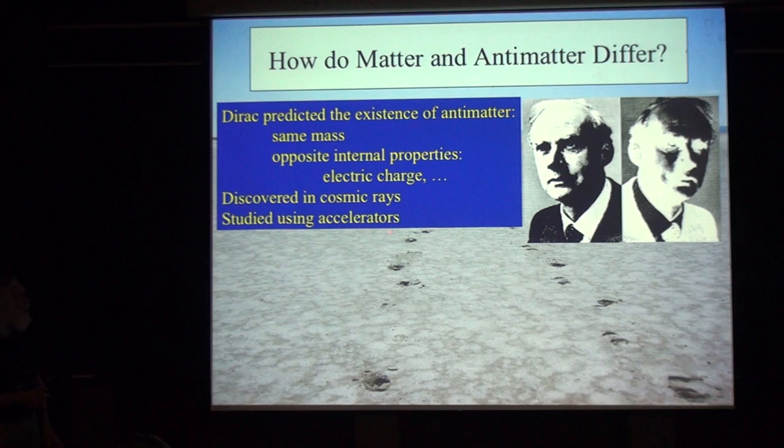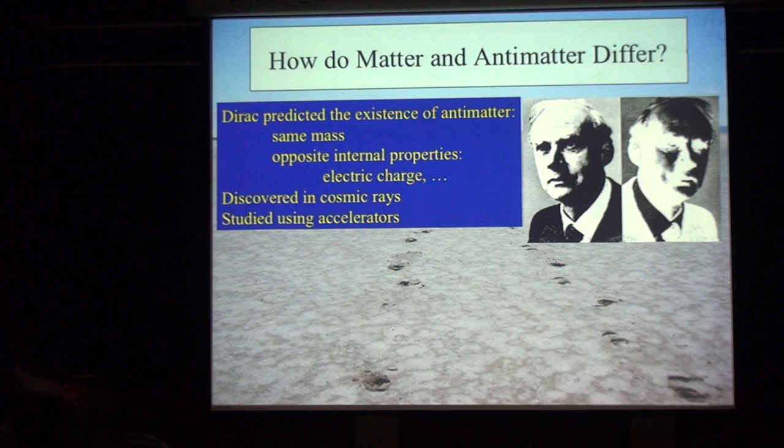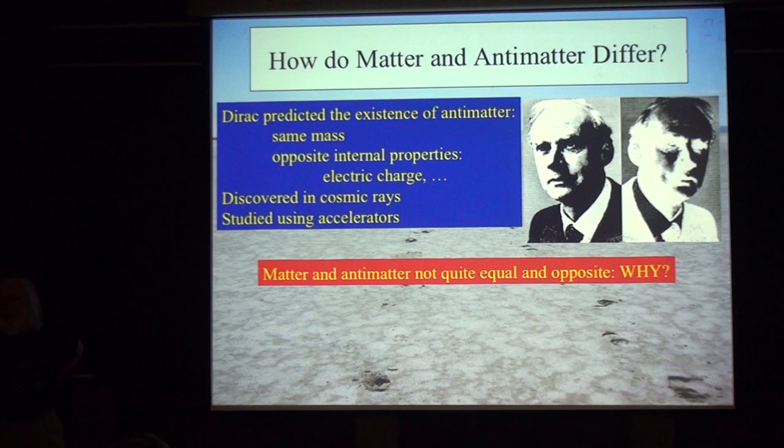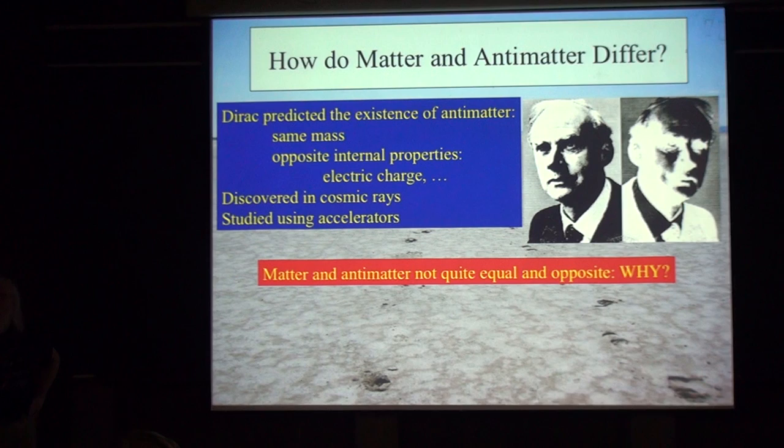In the 1930s the first antimatter particle, the positron, was discovered in cosmic rays, and now they're studied routinely in accelerators, used in medical diagnosis and so on. It came as a big surprise in 1964 when an experiment showed that matter and antimatter are actually not quite equal and opposite — at least their weak interactions are slightly different.